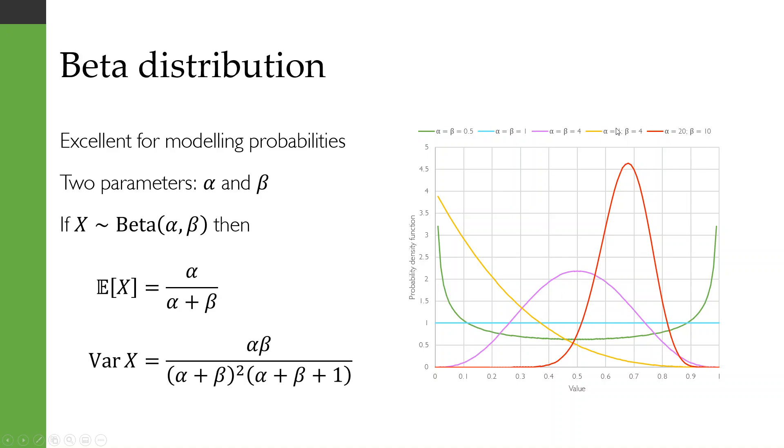When alpha is less than beta, like in this yellowy orange curve, it's more likely that you will get a low value out of it. And when alpha is greater than beta, for example in this red line, you're more likely to get a high value.